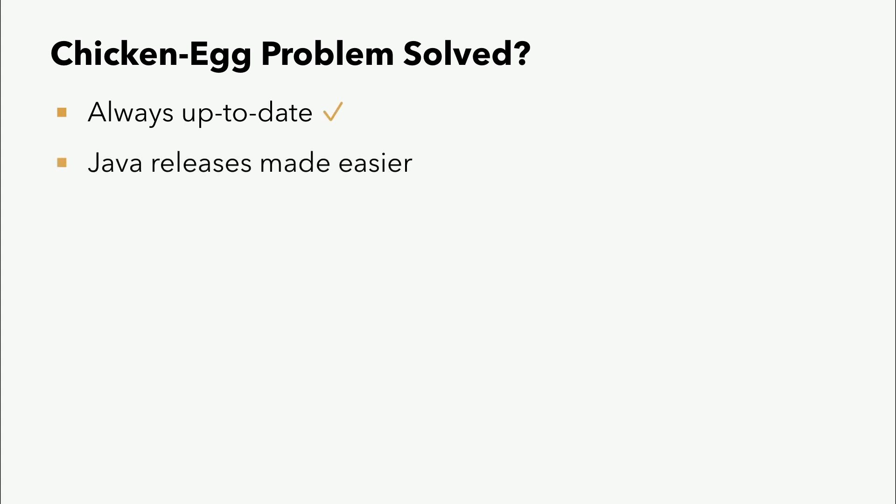Haben wir jetzt das Henne-Ei-Problem gelöst? Die API ist immer up-to-date. Wir müssen nicht mehr warten, bis ein Bytecode-Feature jetzt auch wirklich in Java ankommt. Also meiner Meinung nach ist das auf jeden Fall gelöst. Das macht Java-Releases einfacher, wir bekommen mehr Features. Gleichzeitig macht das aber auch Updates für Libraries besser, wenn sie die neue API einsetzen. Das ist der kleine Caveat an der Stelle, weil auch wenn das Feature jetzt in Java 25 rauskommt, wird es trotzdem noch wahrscheinlich ein paar Jahre dauern, bis es bei den Entwicklern ganz hinten in der Kette ankommt, wenn überhaupt.